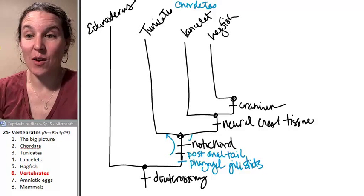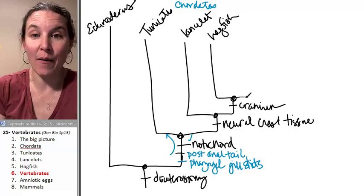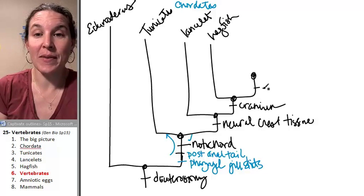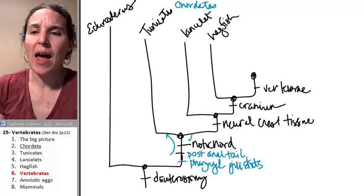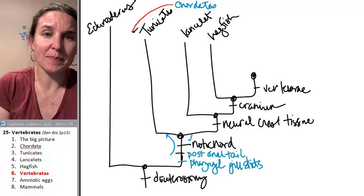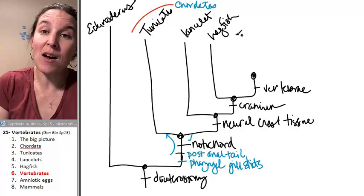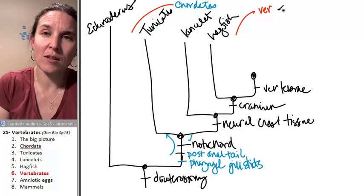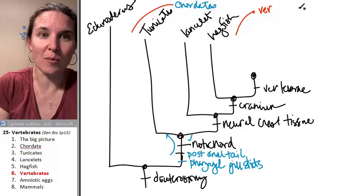All right. Guess what trait is coming now? Everybody beyond this point has vertebrae. So everybody beyond that point was a chordate. Everybody beyond this point is a vertebrate. Vertebrate. Invertebrate? No. Vertebrate.